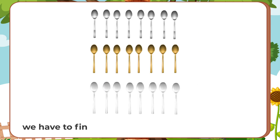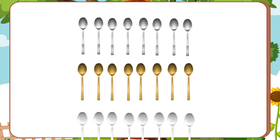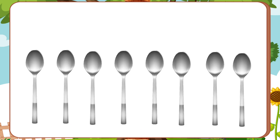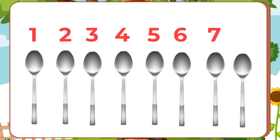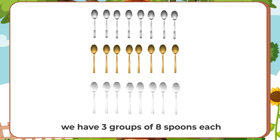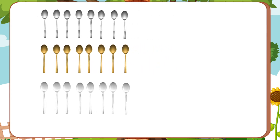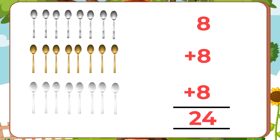Now kids, here we have to find out how many spoons are in each group. So, let's find out the number of spoons in the first group. Let's count: one, two, three, four, five, six, seven, eight. So, there are eight spoons in each group, right? So, here we can see there are three groups of spoons, right? And in each group you have eight spoons. So, how many total spoons do you have here? Eight plus eight plus eight, that is 24 spoons.